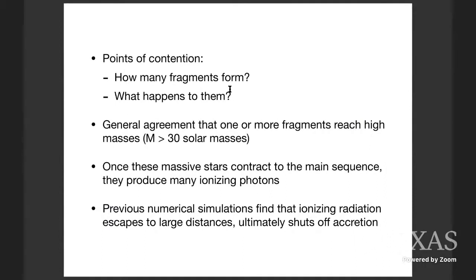I think there's general agreement that one or more of these fragments is going to survive down at the center of the halo, is going to accrete enough mass to become a massive star. And once this massive star, or these massive stars if you form more than one, contract to the main sequence, they're going to become sources of ionizing photons. Most of the previous numerical work on this, including some of the simulations we've heard about today, find that the ionizing radiation produced by these massive stars escapes to large distances in the halo and ultimately shuts off accretion by shutting off the supply of gas to the disk and ultimately photo-evaporating the disk.